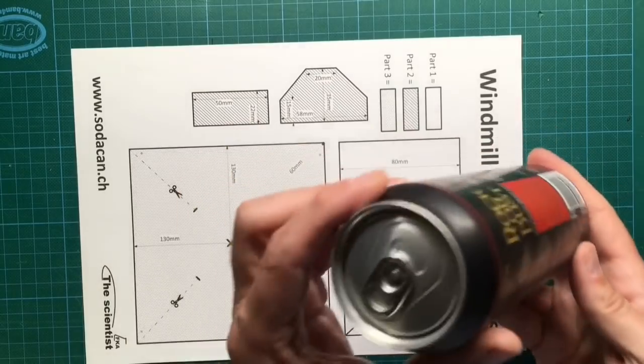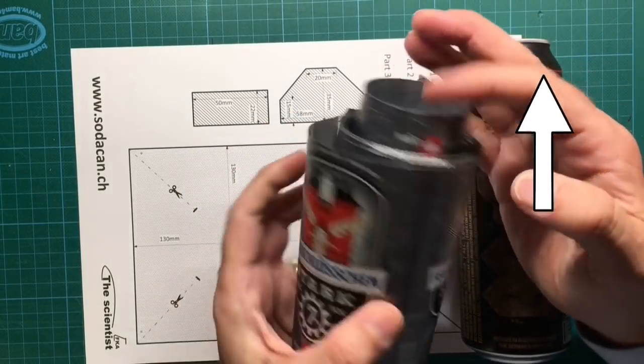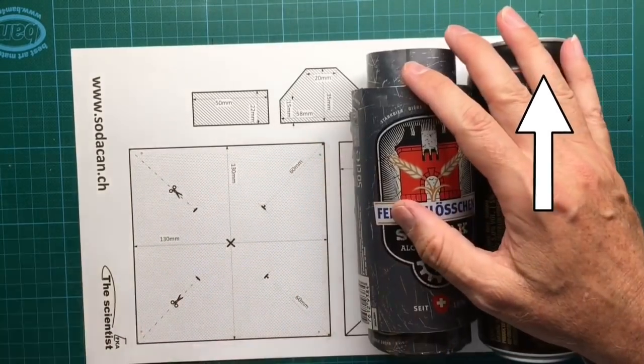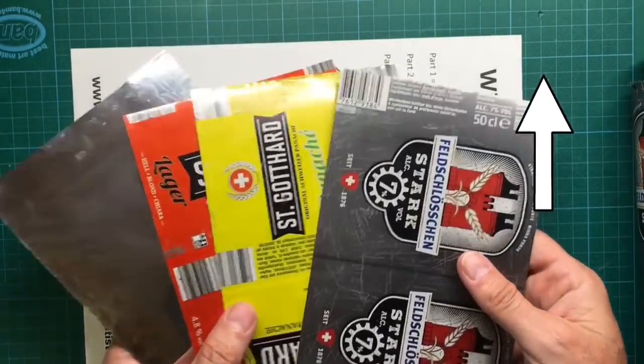The basic material that we need for the pinwheel are flattened aluminum sheets that we obtained from soda cans. I already posted a video on how to make these flattened aluminum sheets, just follow the link in the upper right corner.